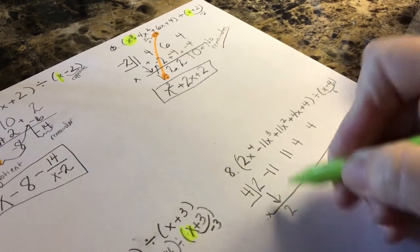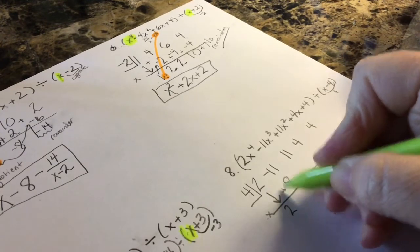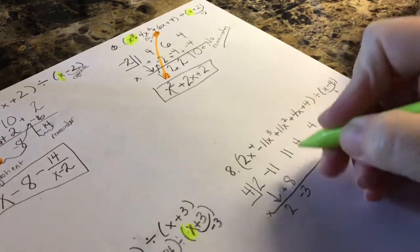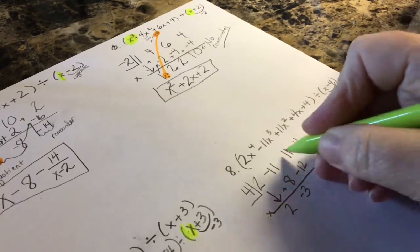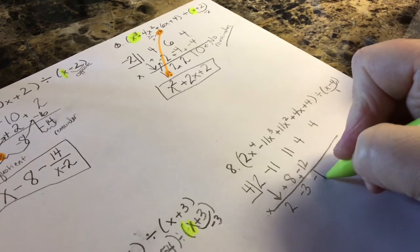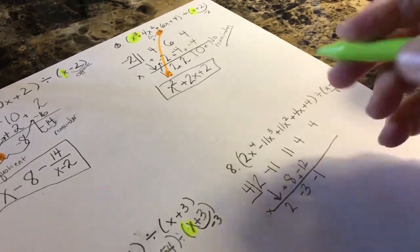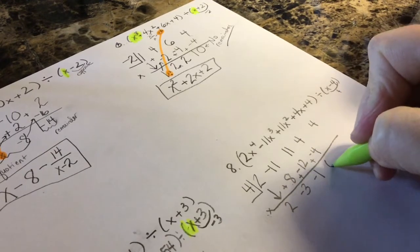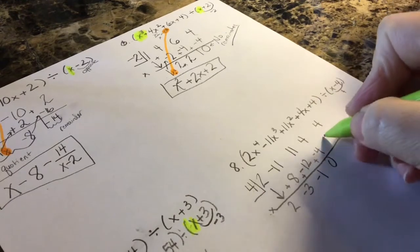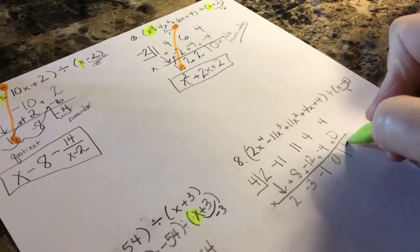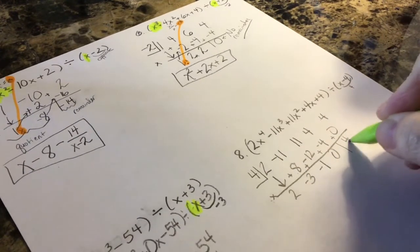Multiply. 4 times 2 is 8. Add. Negative 11 plus 8 is negative 3. Multiply. 4 times negative 3 is negative 12. Add. 11 plus negative 12 is negative 1. Multiply. 4 times negative 1 is negative 4. Add. You get 0. Multiply. 4 times 0 is 0. 4 plus 0 is 4. So I have a remainder of 4.